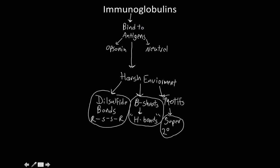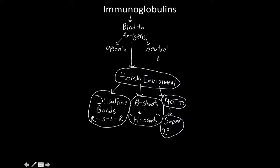Think about all the different places where you can get infections: acidic environments, alkalotic environments, anaerobic environments — a lot of varying pHs, varying alkalinity or salt concentrations. So antibodies have to have ways of staying stable.